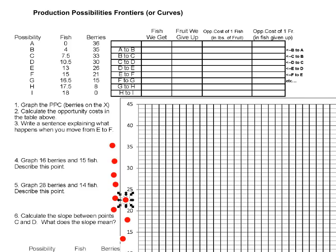In this simple model we're going to look at someone perhaps stranded on an island and their possibilities given their resources. This person has two choices about how to spend their time: either fishing — this is the amount of pounds of fish they could get — or picking berries — and this is the amount of berries they could get with different combinations of time spent on each activity.